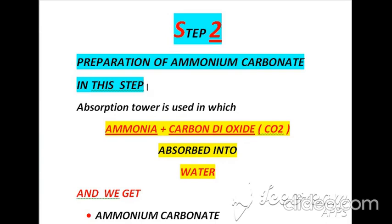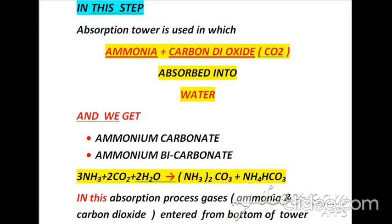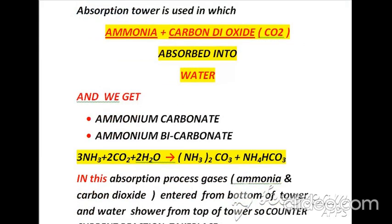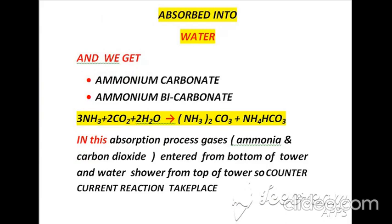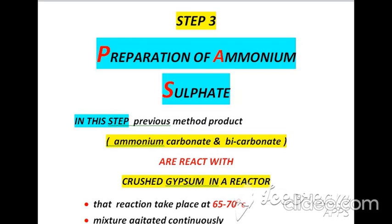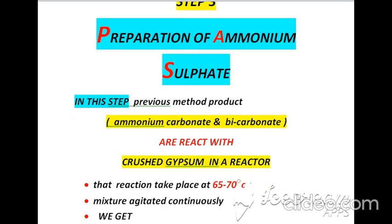According to step two, which is preparation of ammonium carbonate, an absorption tower is used. Ammonia and carbon dioxide are absorbed into water, and as a result we get ammonium carbonate and ammonium bicarbonate. In this absorption process, gases ammonia and carbon dioxide enter from the bottom of the tower, water showers from the top, so a counter-current reaction takes place.